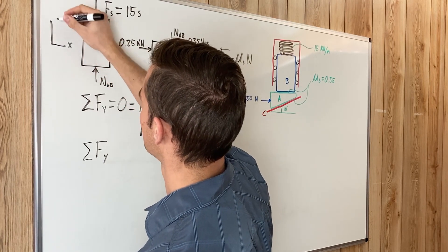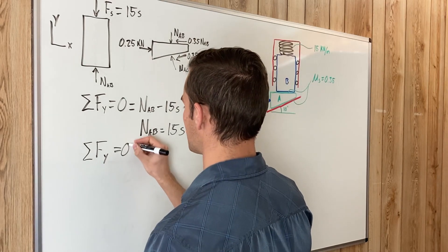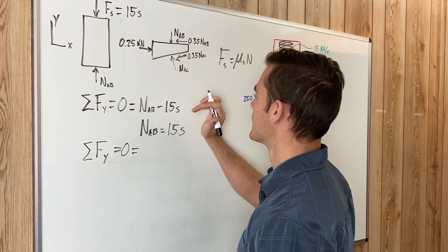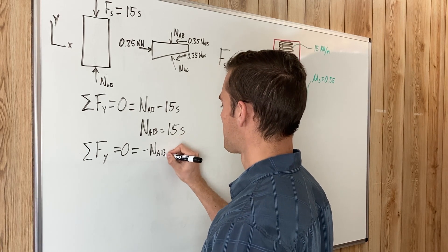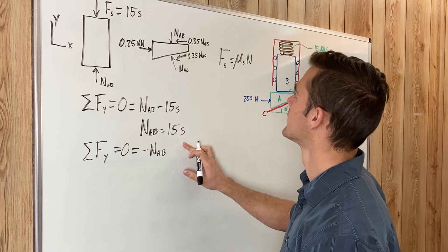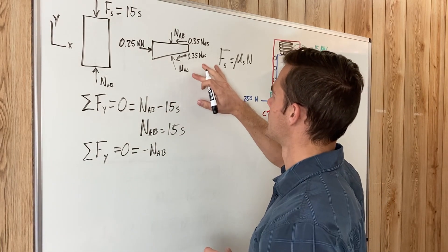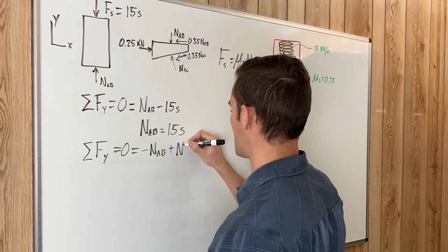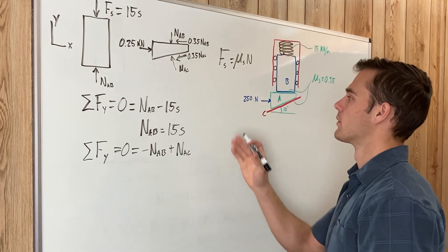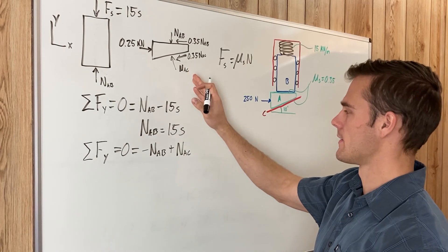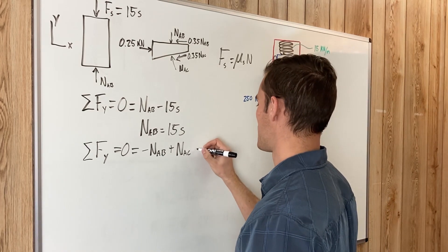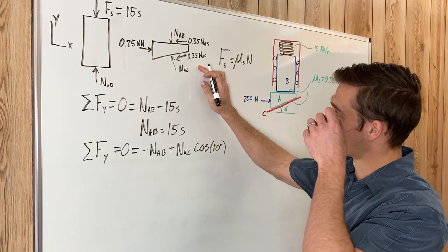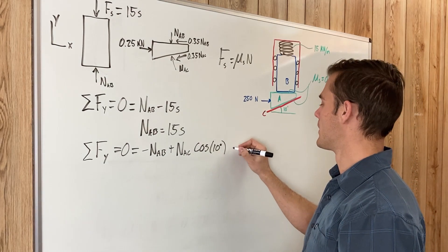Now summing forces on the wedge in the y-direction, also set equal to zero. We have NAB pushing down, so minus NAB. NAC is 10 degrees off the vertical, so its y-component is NAC·cosine(10°) in the positive y-direction. The friction force 0.35·NAC also has a y-component.